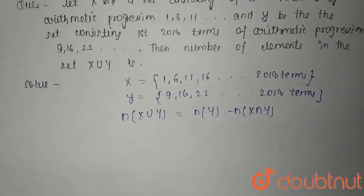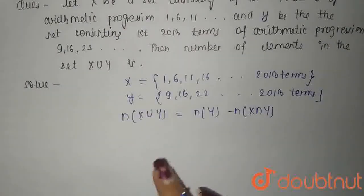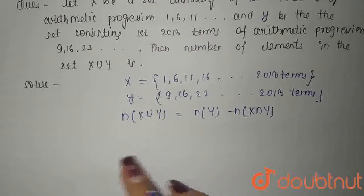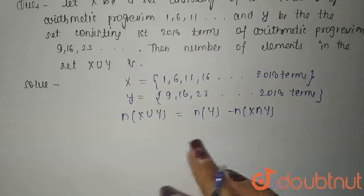So for X union Y, we have to find the common terms in two APs. Common terms will form an AP with common difference as the LCM of the common differences of the given APs.